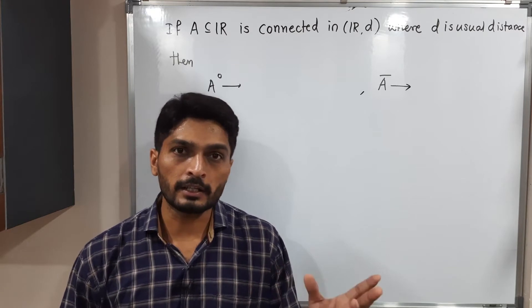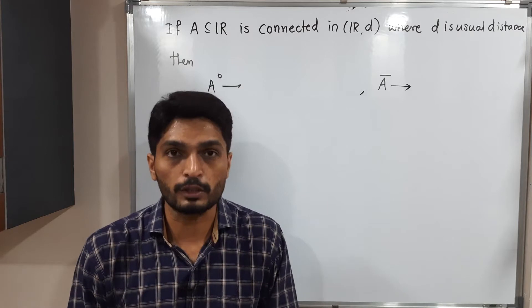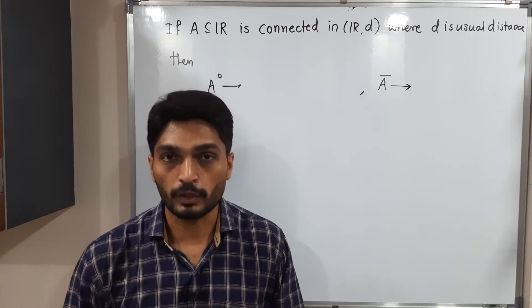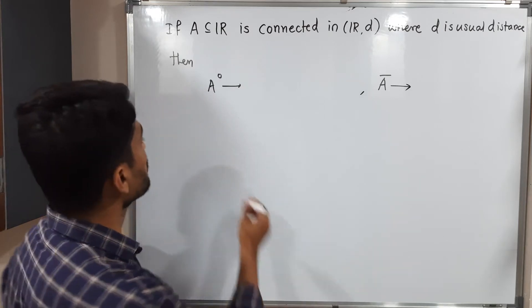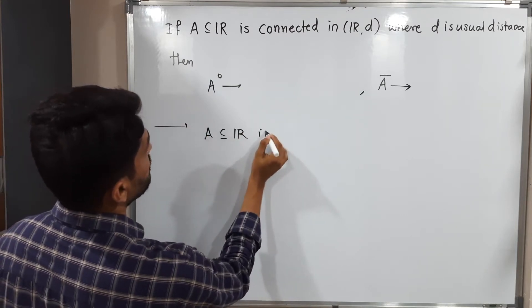Can we say A̅ and A° both of them are connected, or one is connected and the second is disconnected? Whatever the conclusion, we have to make it in this video. So let us start with the given information: we have A subset of R is connected.